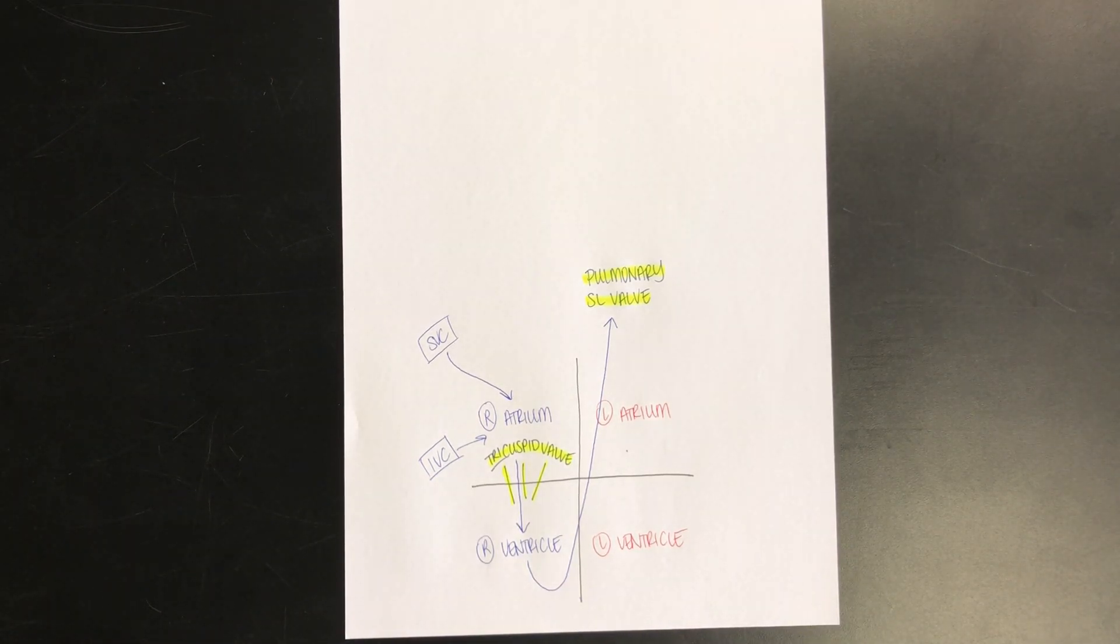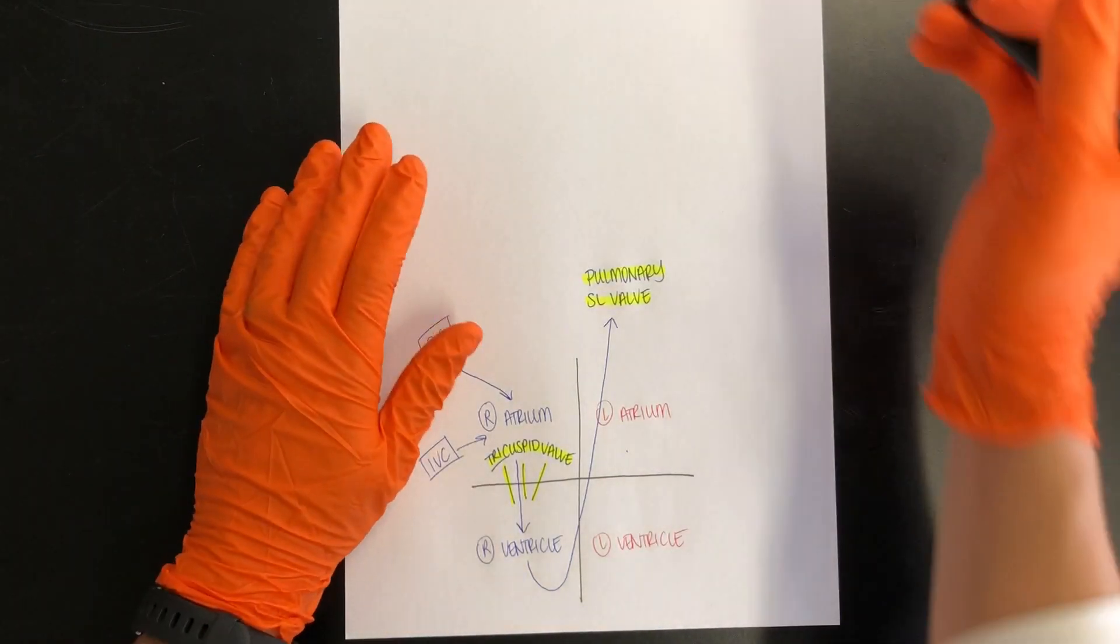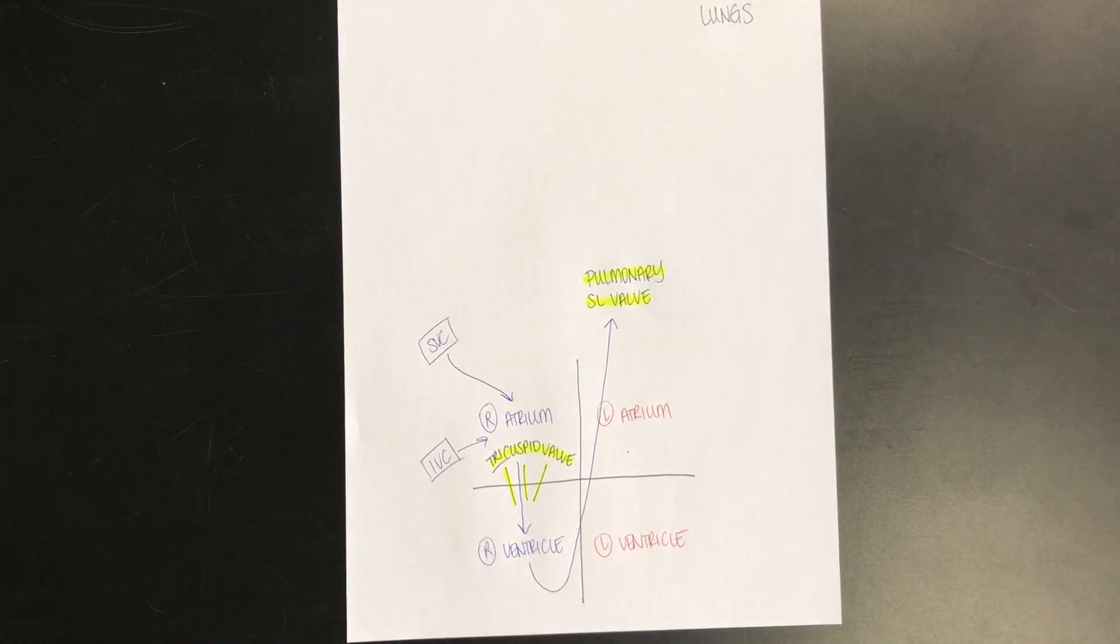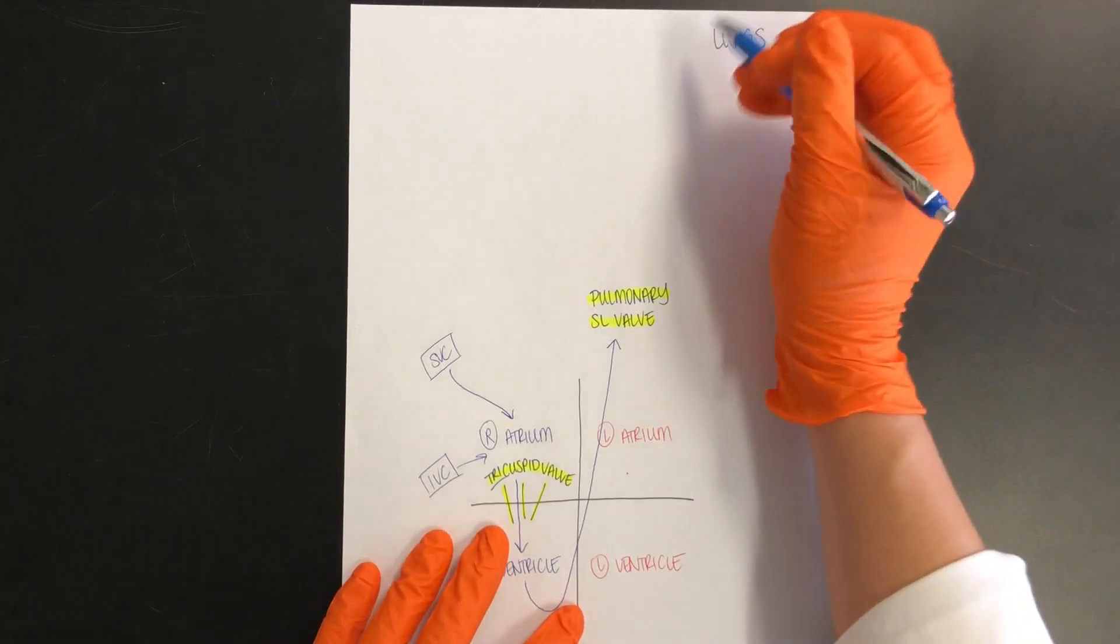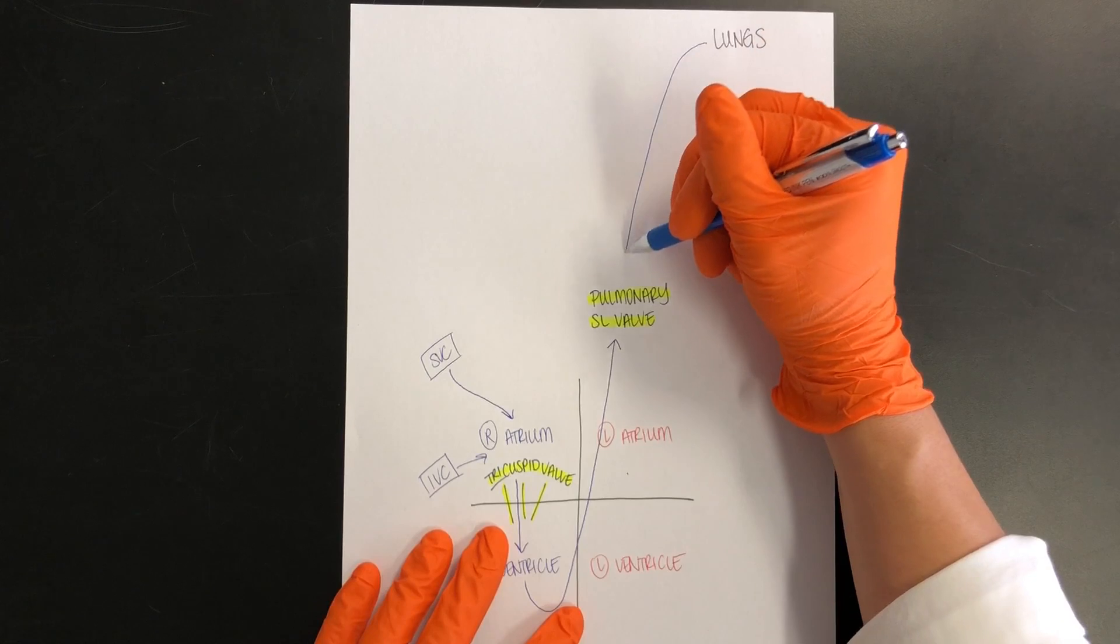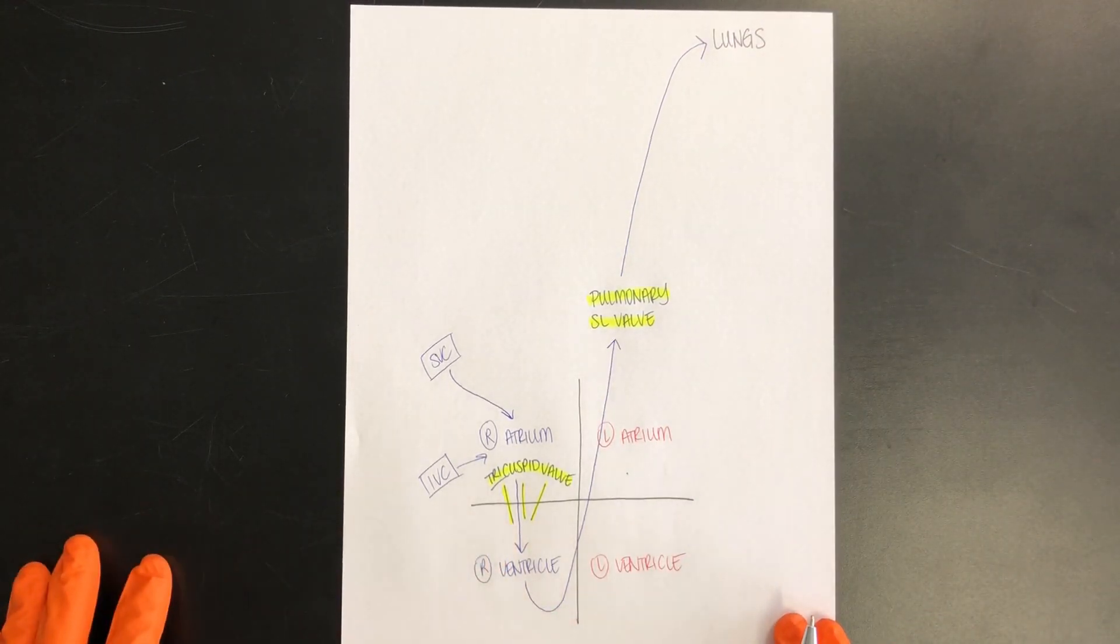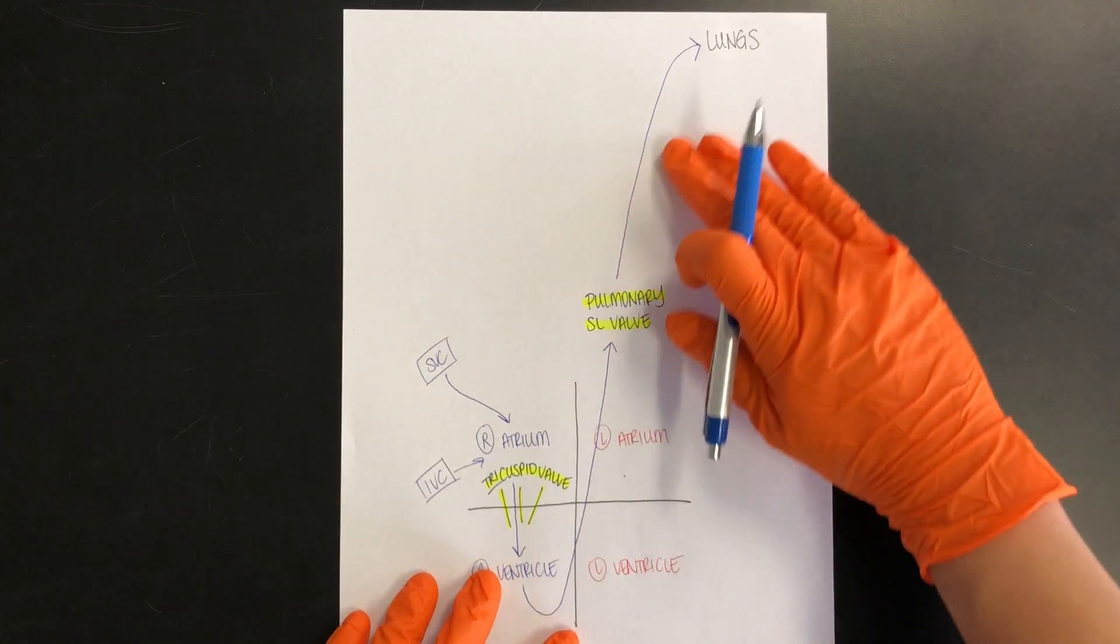Now that root word pulmon reminds us of the lung. And so big picture, we want to think, where is this blood going to go? To the lungs. So at the very top of your page, I want you to write out lungs. And from there, we can take our pen and then draw our arrow showing where it is going.